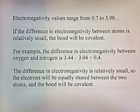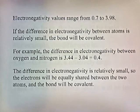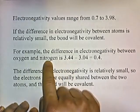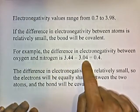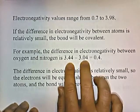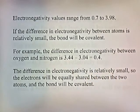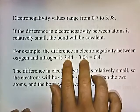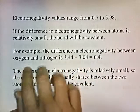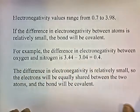If the difference in electronegativity is relatively small, the bond is going to be covalent. For example, the difference in electronegativity between oxygen and nitrogen is 3.44 minus 3.04. These are pretty close in value, so you get a small number. The electrons will be equally shared between the two atoms and the bond will be covalent. In a tug of war between the oxygen and the nitrogen, the electrons tend to stay in the middle.